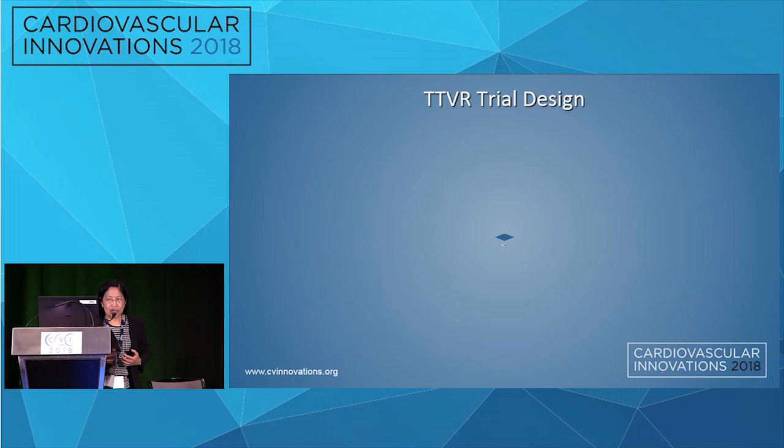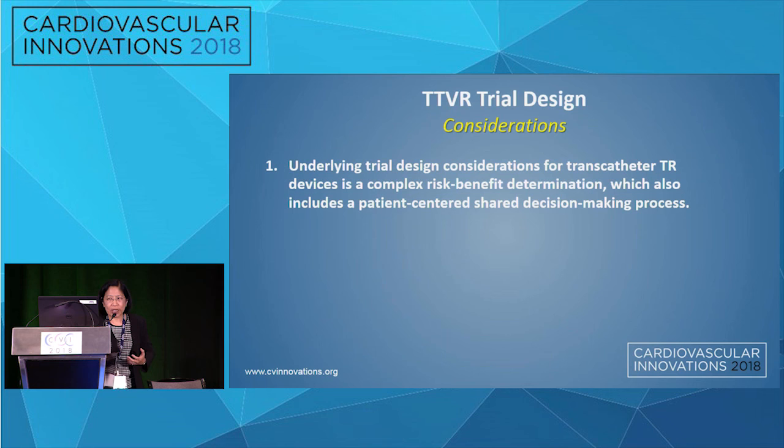The endpoint challenge with Triluminate's moderate TR entry criteria is illustrative: if we're enrolling moderate patients but accepting only one grade reduction — which might mean torrential to severe — how do we reconcile that? A further complexity: TR severity is incredibly variable with small changes in volume status or pressure management. It might be moderate yesterday and torrential the next day without a single change in management. This complicates measuring actual regurgitation severity.